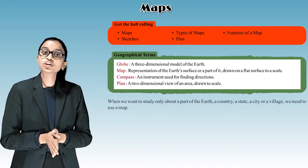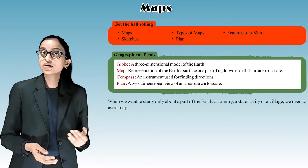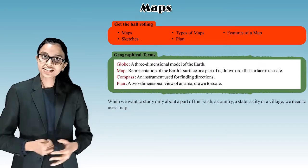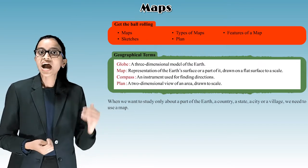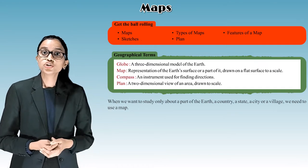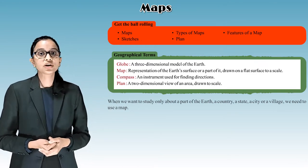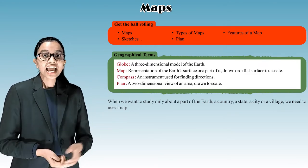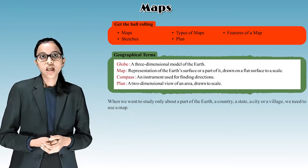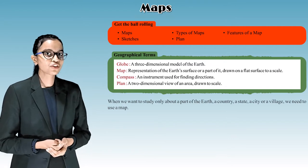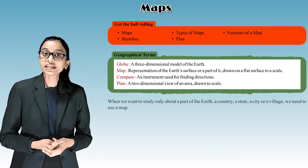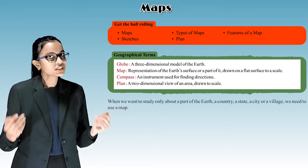A three-dimensional model of the earth. A globe is the three-dimensional model of the earth. Have you all seen it? Map, representation of the earth's surface or a part of it drawn on a flat surface to a scale. Compass, an instrument is used for finding direction. I hope it will be interesting for you. Plan, a two-dimensional view of an area drawn to scale.